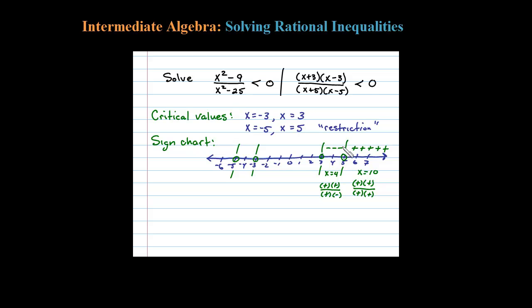So any number I choose in that interval will yield a negative result. Okay, so let's continue testing our intervals. When I choose x equals 0, you can look at the original. If I plug 0 into the original here, I'll have zeros here for x, leave me with minus 9 over negative 25, which is positive.